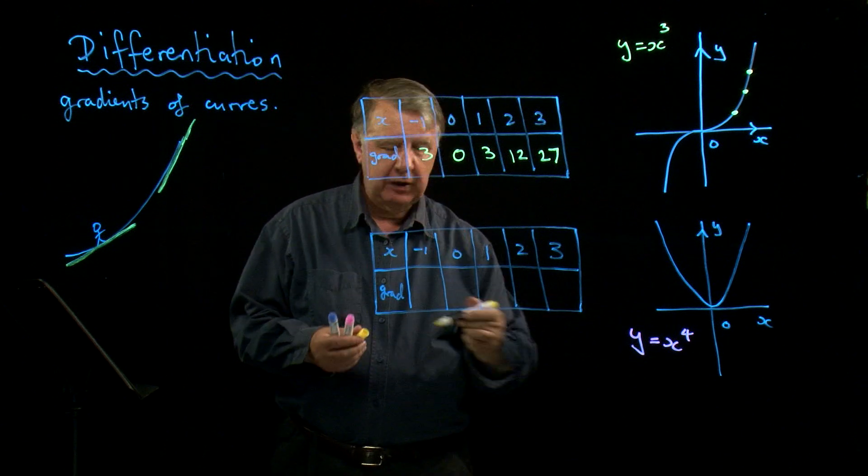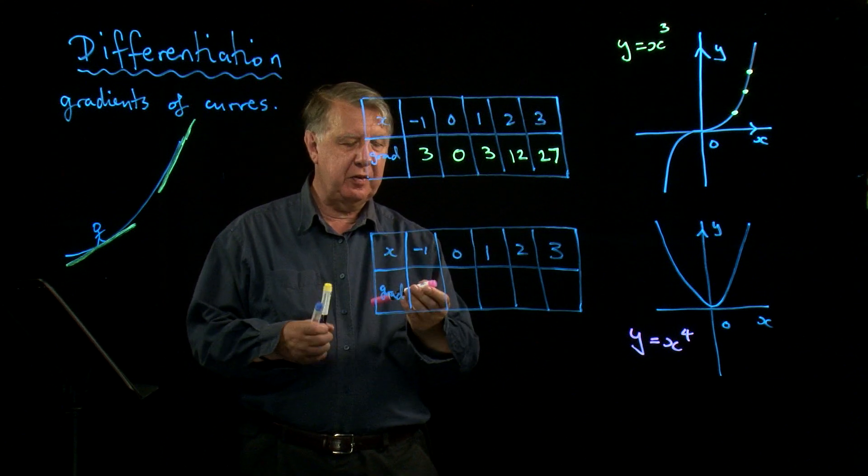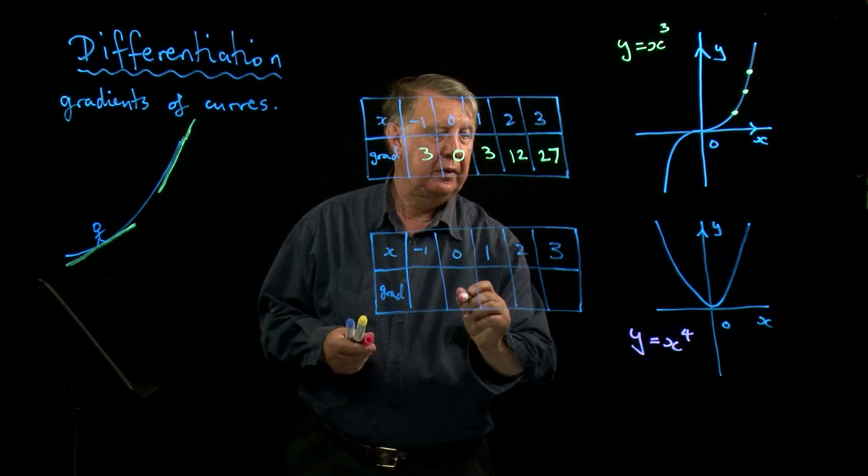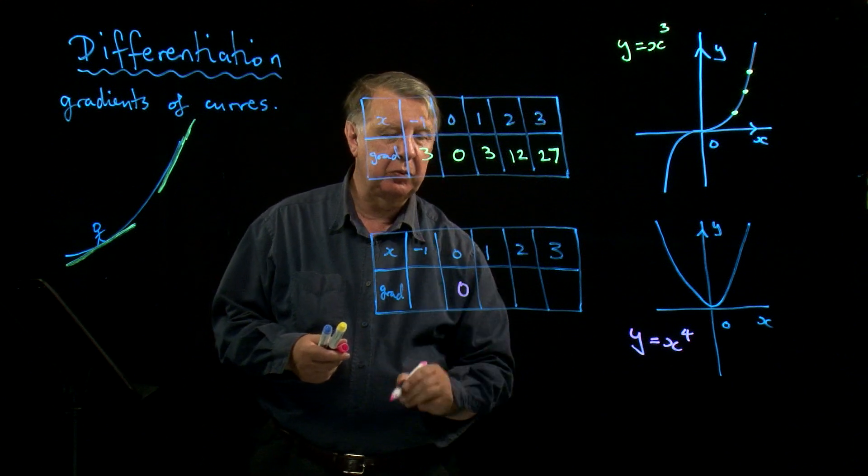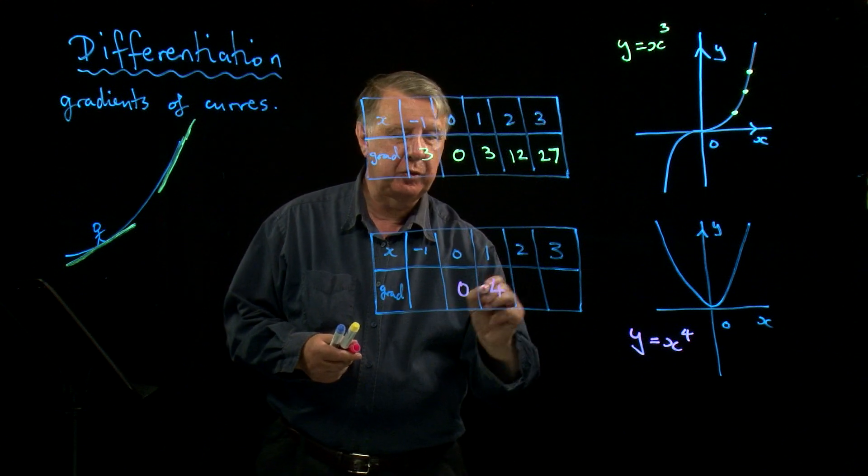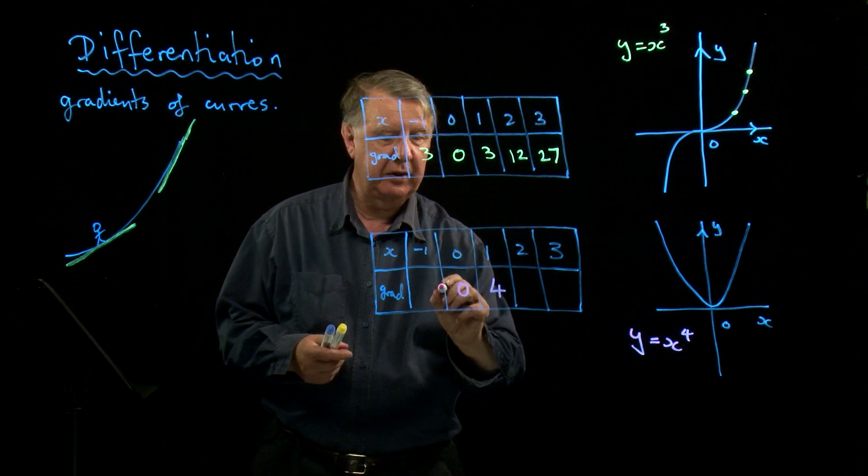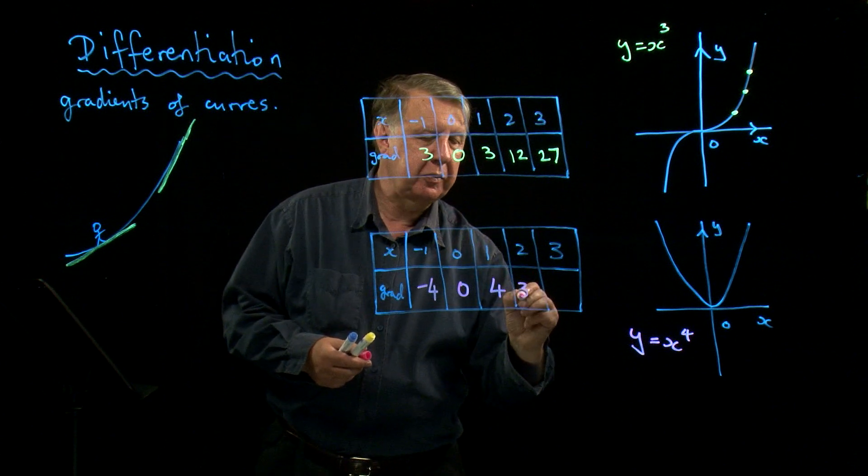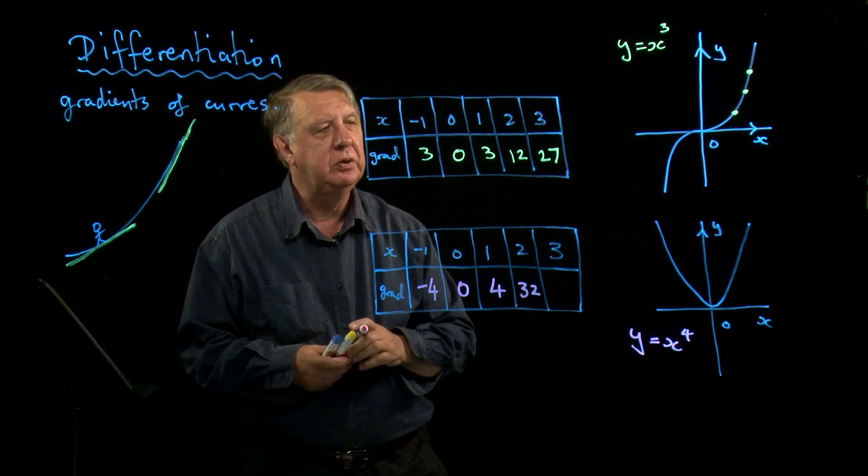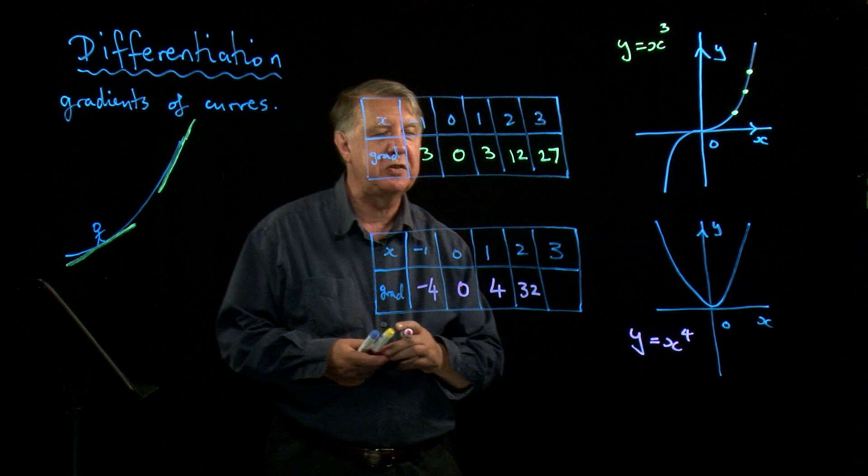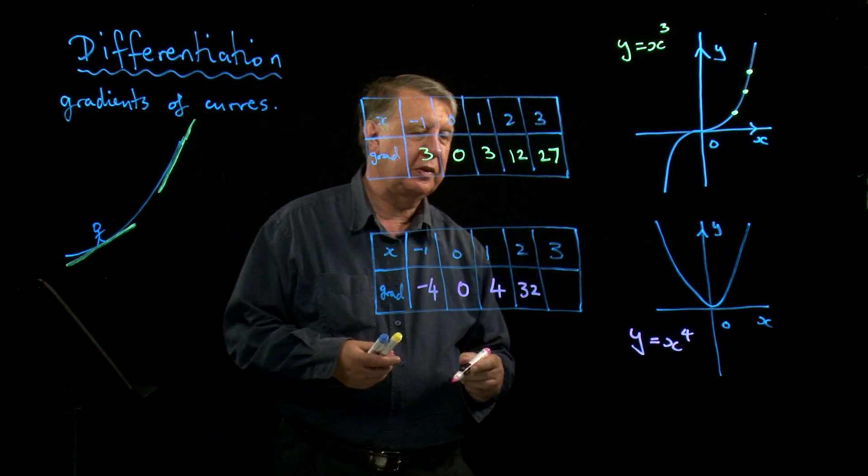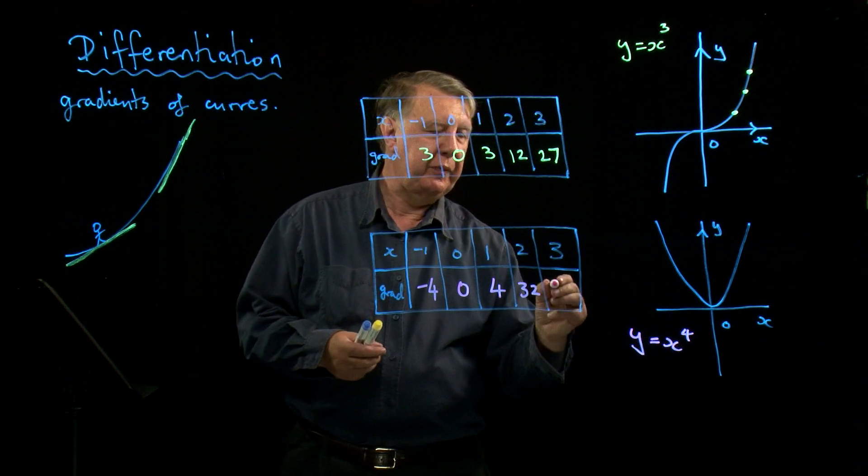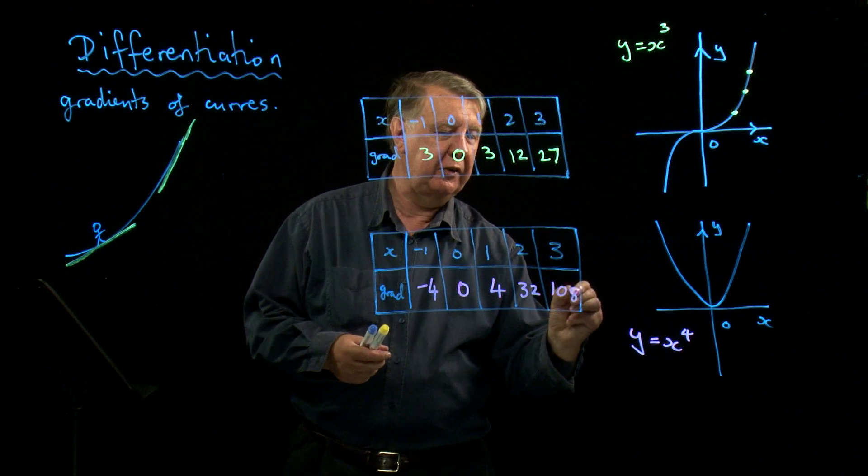And then I could do the same with the x to the 4 graph. And again, this is going to be 0 there. This comes out as 4, and this comes out as negative 4. This comes to be a colossal 32, even steeper than that previous one. And by the time we get to this one, it's 108.